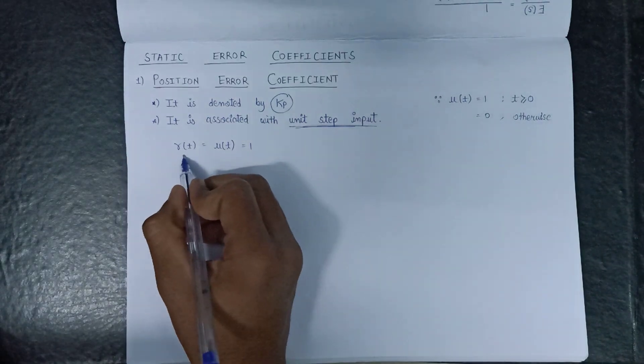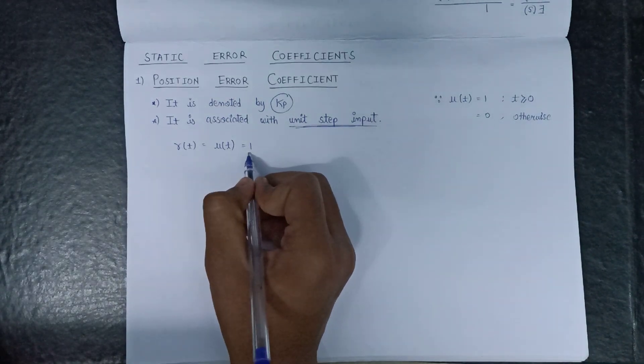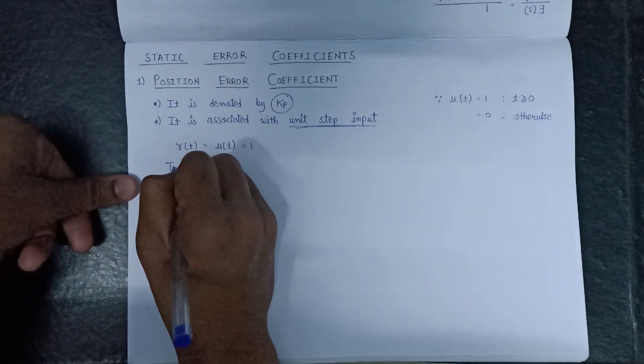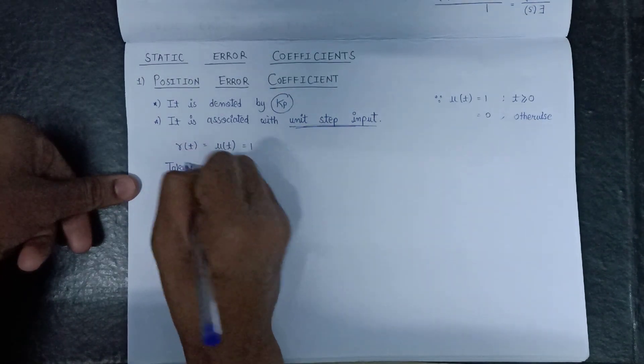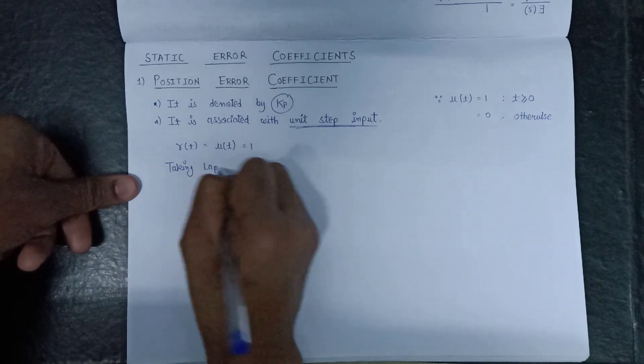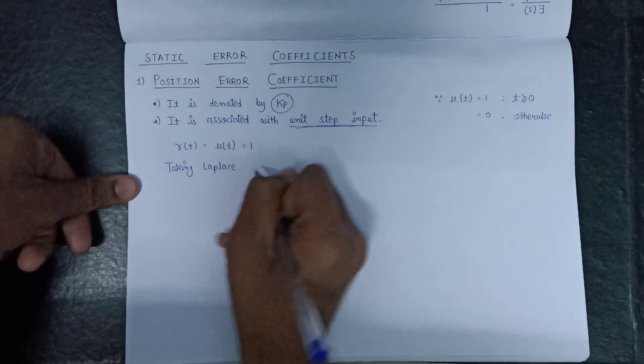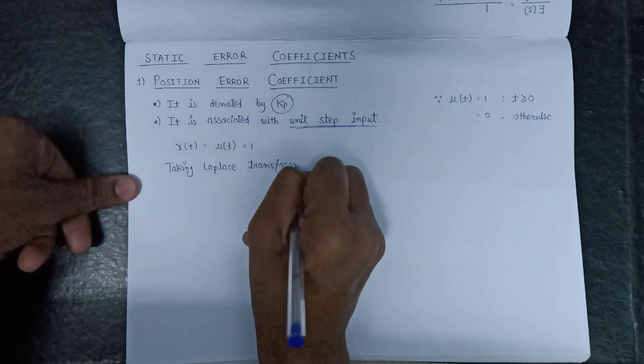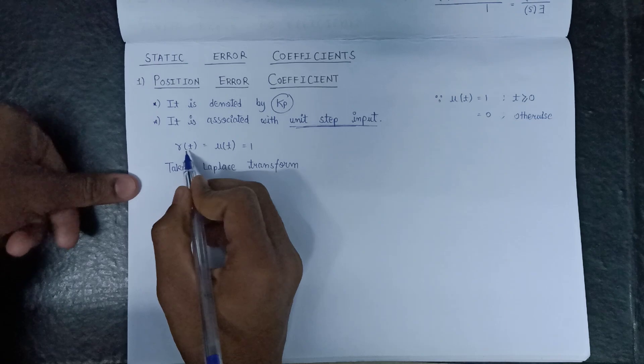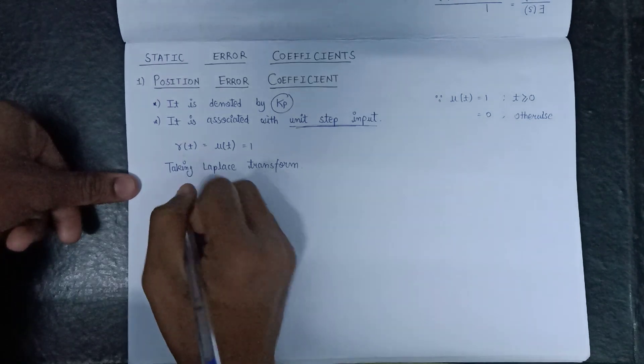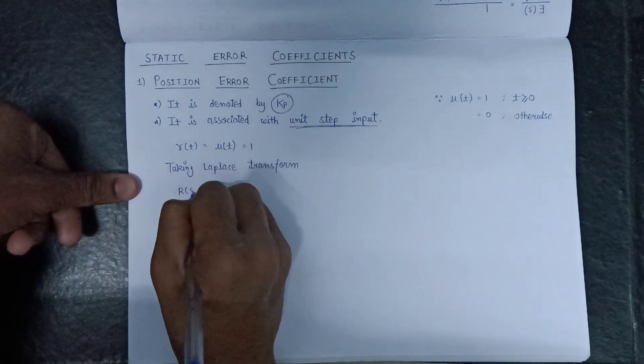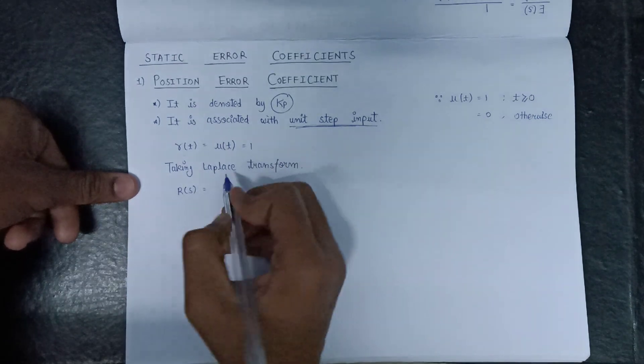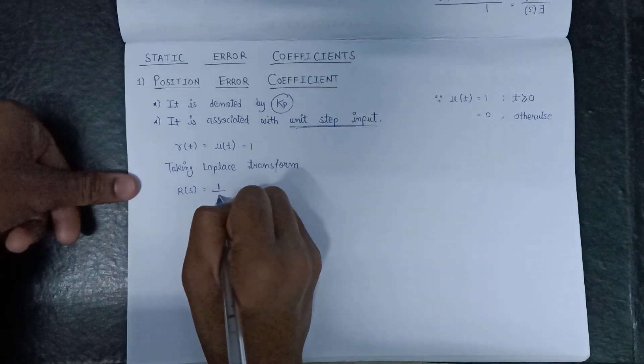That's why R will be equal to 1 only. On taking the Laplace transform, we get R(s) and the Laplace transform of 1 is equal to 1 over s.